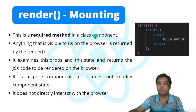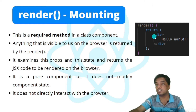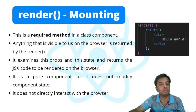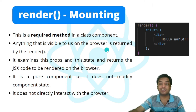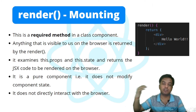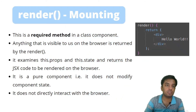Next comes the render method in the mounting phase. This is a required method in a class component — without it, the class component won't be valid. Anything visible on the browser is returned by the render method. It examines this.props and this.state and returns the JSX code to be rendered. It is a pure method — it does not modify the component's state. It does not directly interact with the browser; it only interacts with the Virtual DOM.